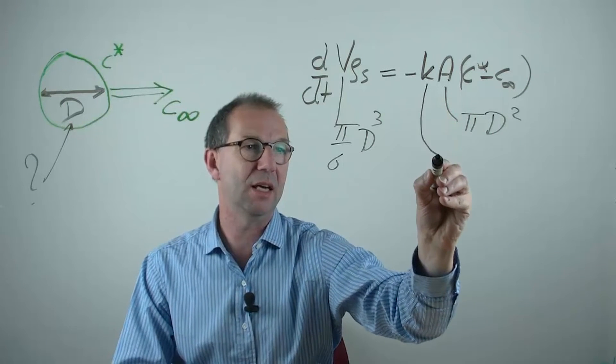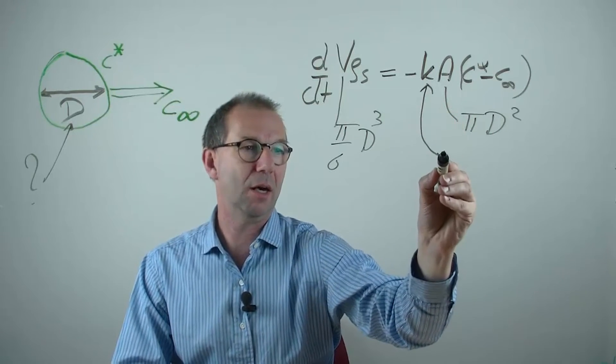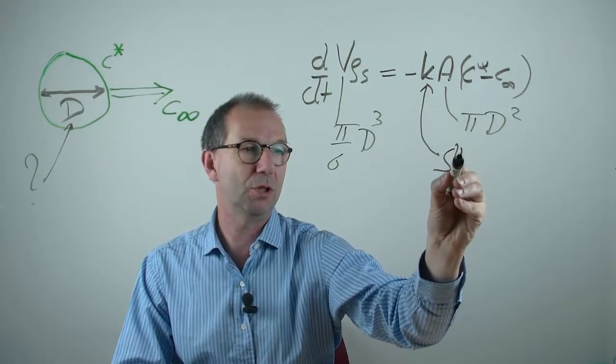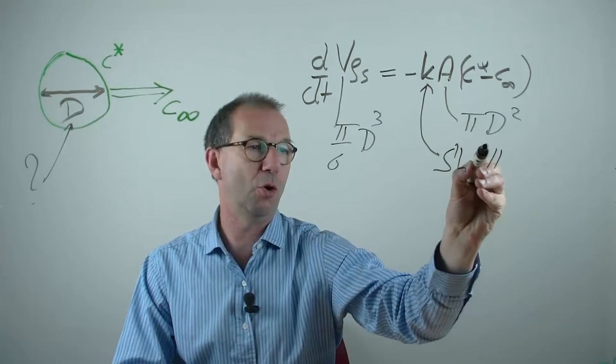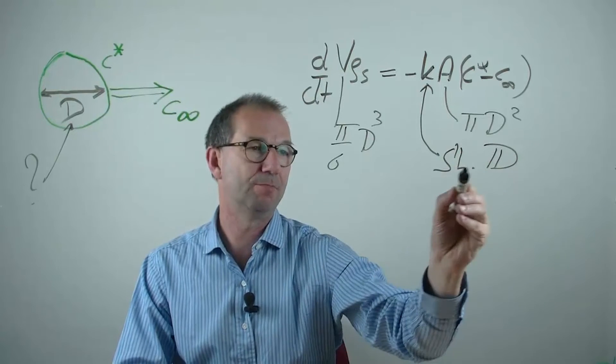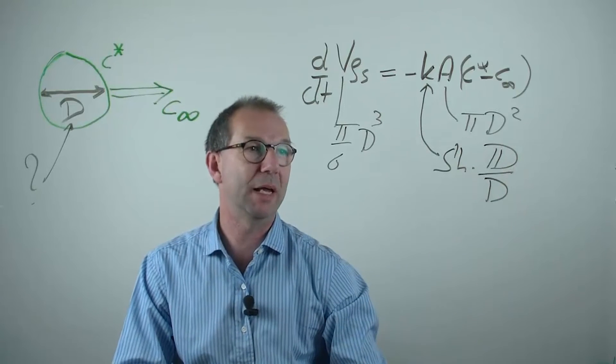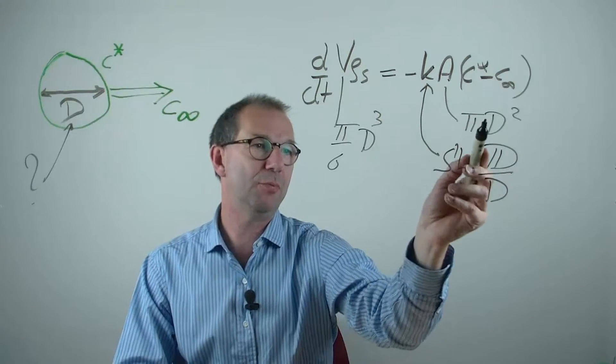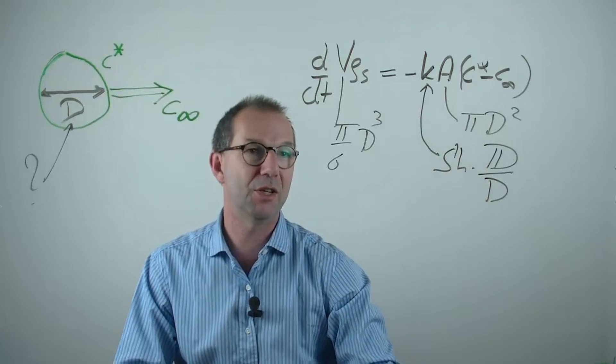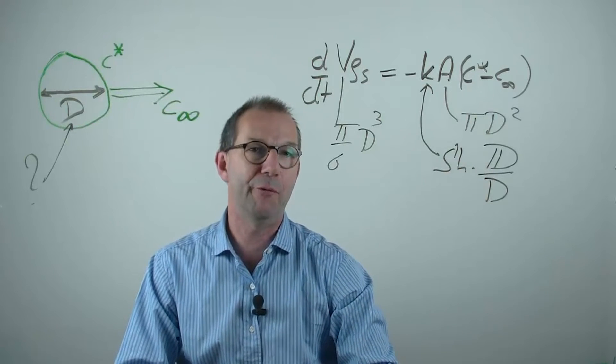But there is also one hidden in k. K can be written as Sherwood times the diffusion coefficient which I give a double dash over D, the diameter itself, estimated from the flat plate. And you see that D is present at multiple locations and we need to carefully try and find how that works.